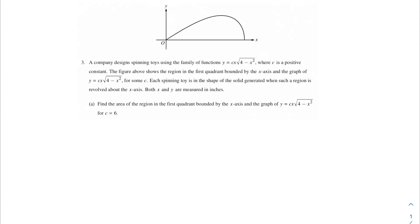In this problem, we're talking about spinning toys. A company is designing spinning toys using the family of functions y equals c times x times the square root of 4 minus x squared, where c is a positive constant. The figure above shows the region in the first quadrant bound by the x-axis and the graph for some c. Each spinning toy is the shape of the solid generated when such a region is revolved around the x-axis. Both x and y are measured in inches. Find the area of the region in the first quadrant bound by the x-axis and the graph for c equals 6.